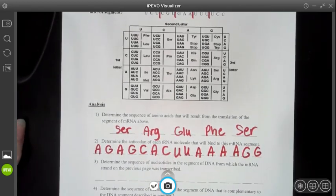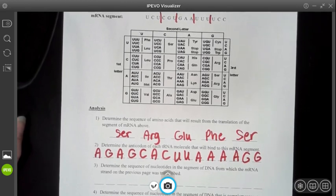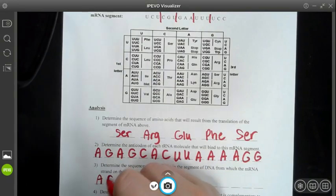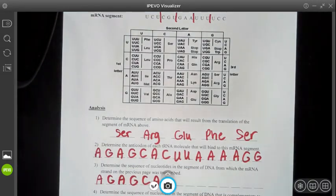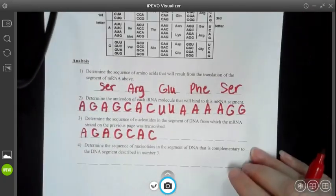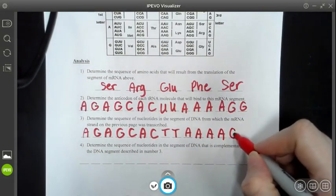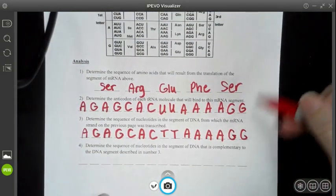Now number three is to determine the sequence of nucleotides in the segment of DNA from which the mRNA strand is transcribed, which means I'm working backwards. So U is going to be A still. And if you notice, my anticodon, my tRNA, and my DNA are going to be very similar. There's only going to be one difference. Instead of U's, I'm going to see T's because DNA does not have uracil and RNA does not have thymine. But that's how you do that one.